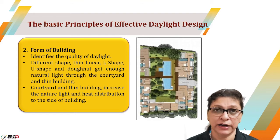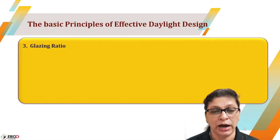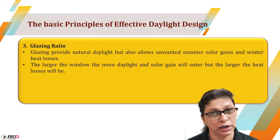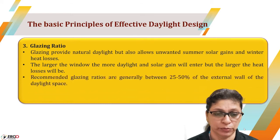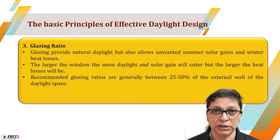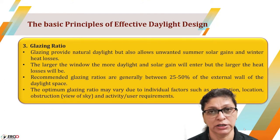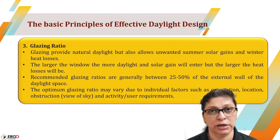The next affecting parameter in daylight design is the glazing ratio. Ideally, 25 to 50 percent glazing ratio is optimum, but again it depends on the type, location, and shape of the building. A larger window obviously allows more daylight to enter, but at the same time heat exchange will also be more. So if the building is exposed to extreme conditions — big summers and low winters — this has to be compromised with daylight.